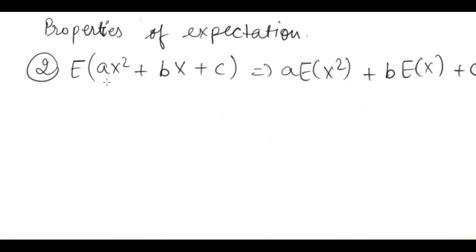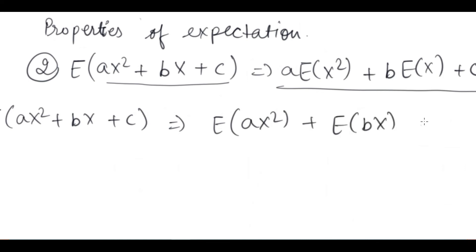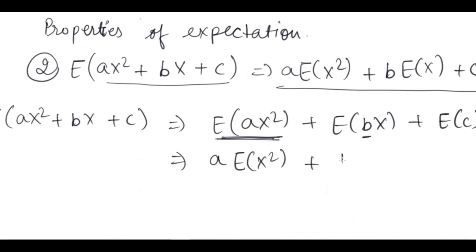The next property is: if there is any quadratic equation, the expectation can be separated. So the expectation of aX squared plus bX plus c can be separated as expectation of aX squared, plus expectation of bX, plus expectation of c. Using the previous properties, the constants come out and we get a·E(X²) plus b·E(X) plus c. These are all the properties of expectation which we use in questions.